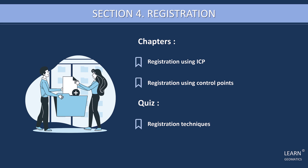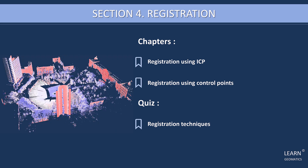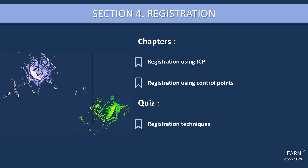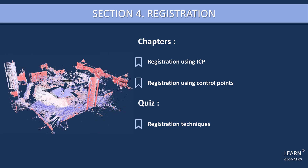Section four covers registration techniques using ICP (Iterative Closest Point) and Picked Points. You'll learn how to register Point Clouds accurately and efficiently using these techniques. At the end of the section, there will be a quiz to test your understanding of the registration theory.